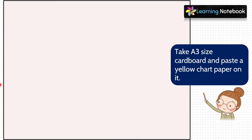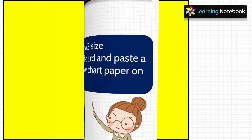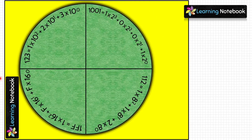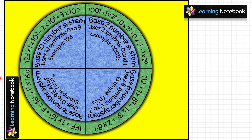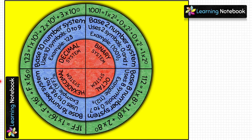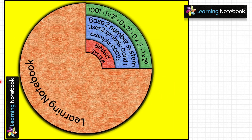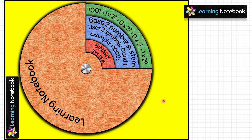Now take one A3 size cardboard and paste a yellow chart paper on it as shown. Take the three circles and place them on top of each other on this cardboard. Then take the orange circle and place it on top, matching the centers of all four circles. Make a small hole in the center of all four circles as well as in the cardboard, then screw the nut and bolt through these holes.